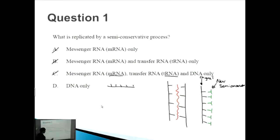If it's single-stranded, how can half of it be from its parent and half of it be new? Whereas for DNA you have two different strands, so one strand can be old and one strand can be new. Therefore the correct answer is D, DNA only.